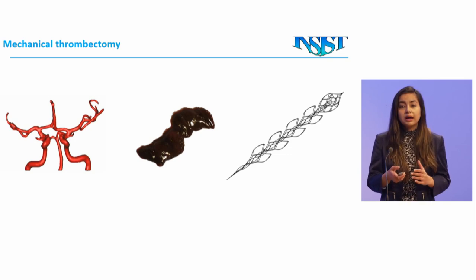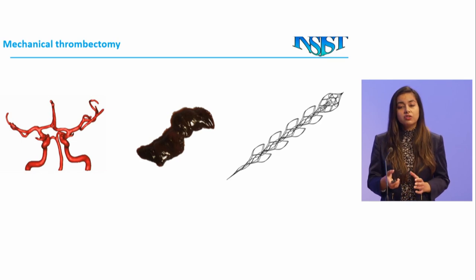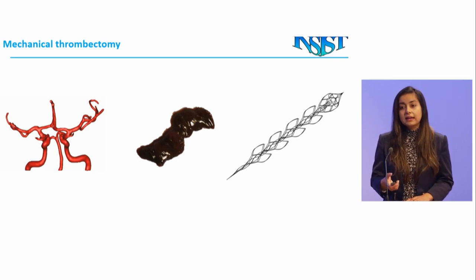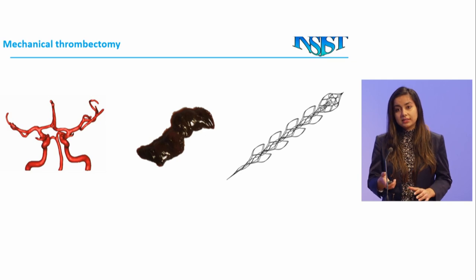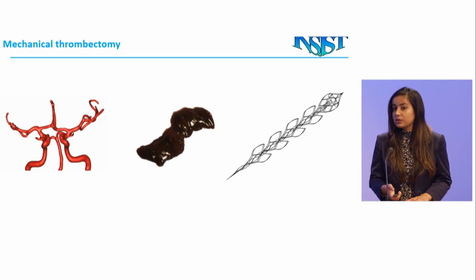To recreate mechanical thrombectomy on a bench you need three important components: one is a vessel anatomy, then you need different types of clot compositions, and then a device that would treat the occlusion. We have to characterize each of these options to be able to understand them deeply. I now hand over to my colleague Behrouz to explain how the mechanical behavior of these clots makes a difference to the outcome of the patients.